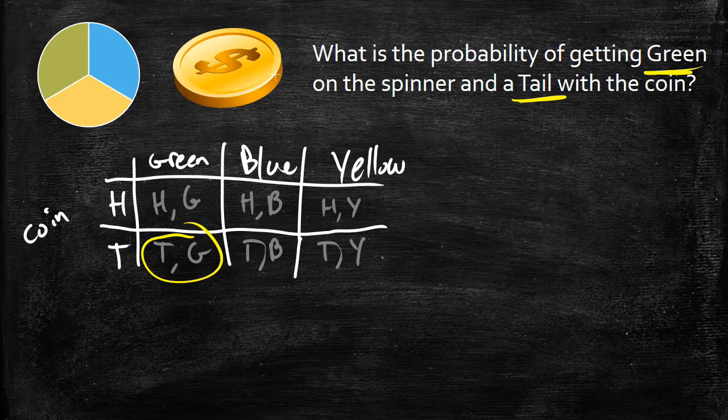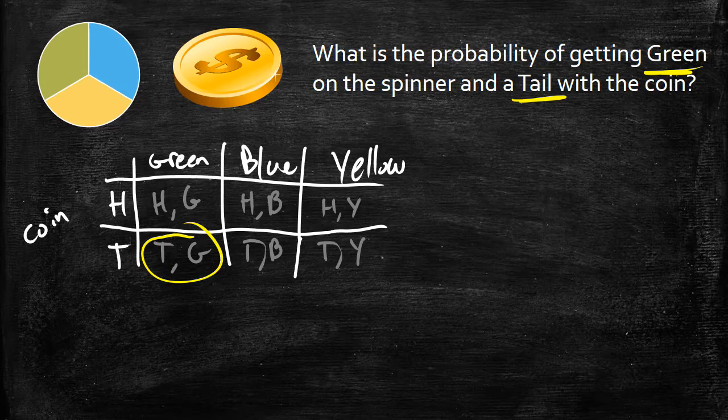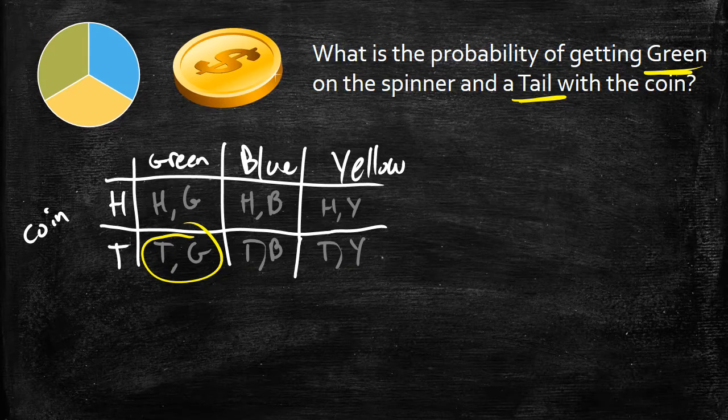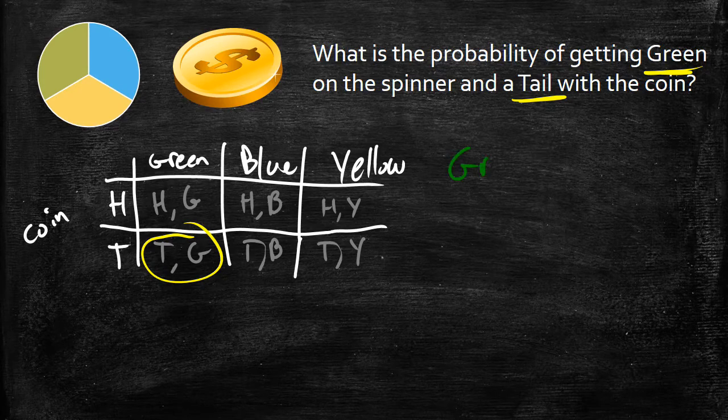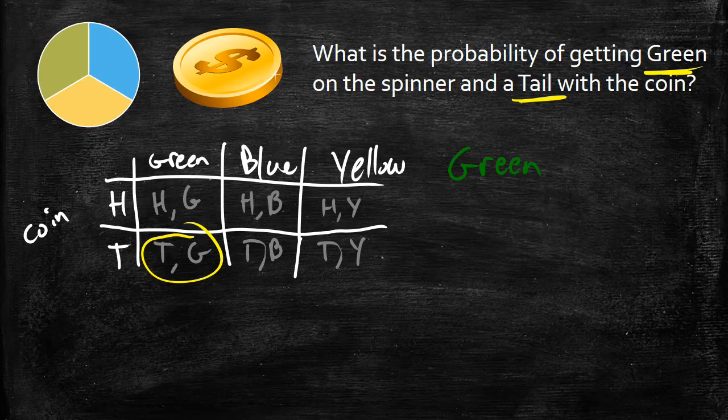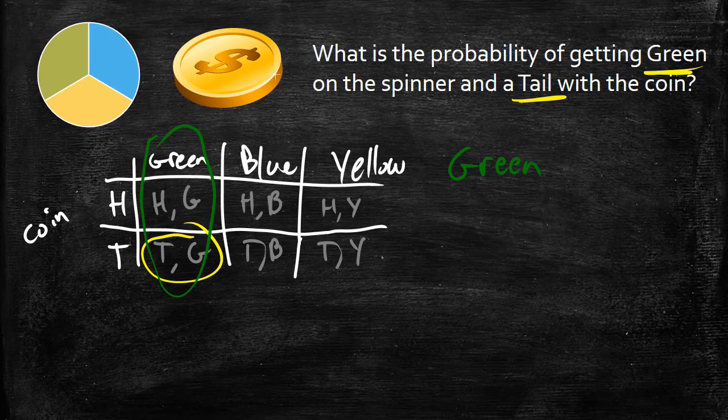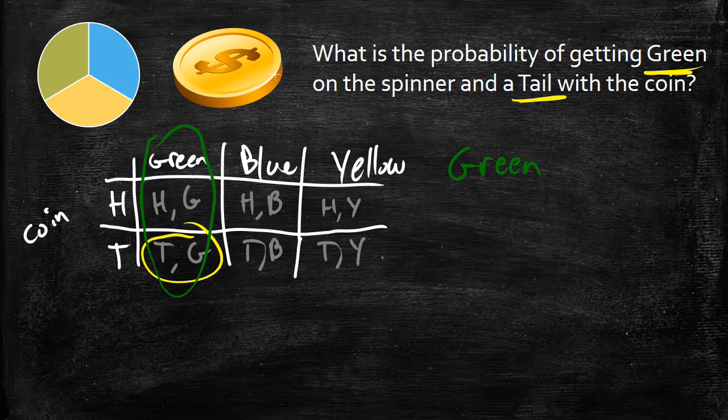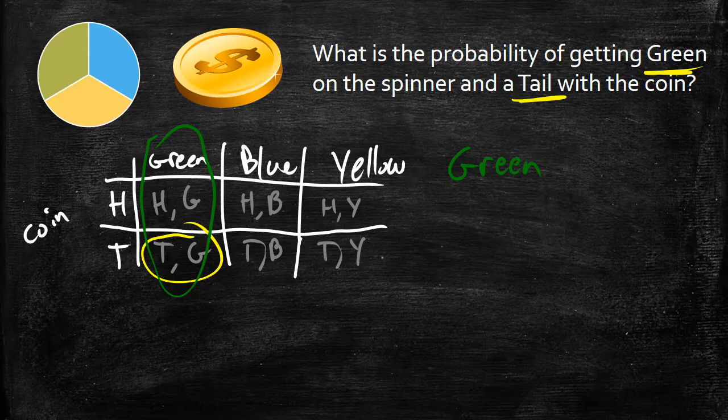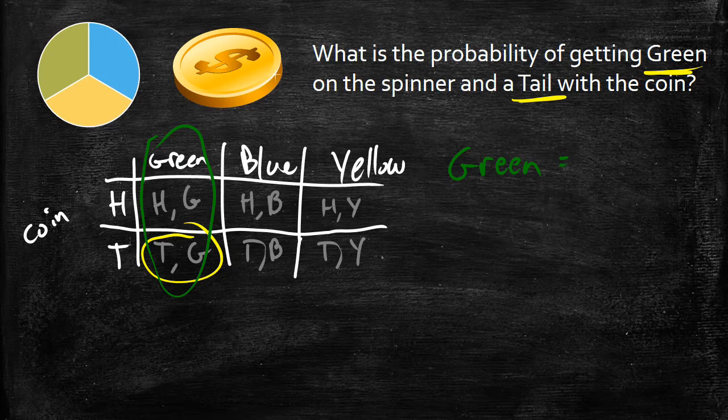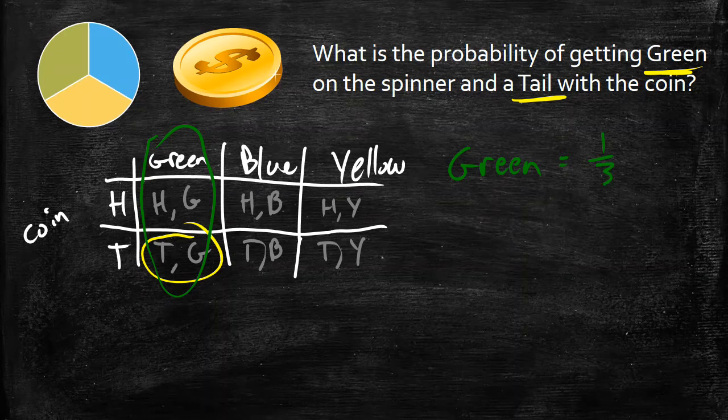But the other way we can do this, and we'll start with a very basic example, is by looking at the probability of each event happening on its own. So if I take a look at the probability of getting a green, that is this column here. I know that there are three options that I can get out of a three-sided spinner with these colors, and I know that the probability of getting a green is 1/3.